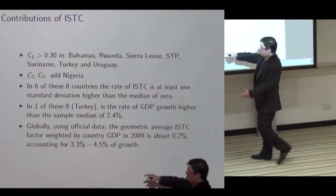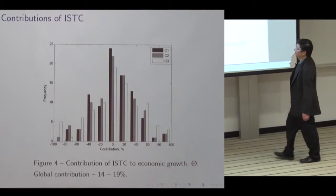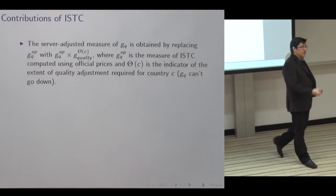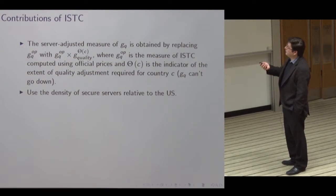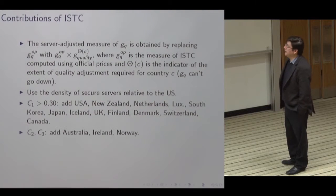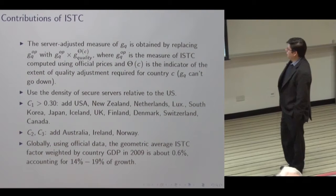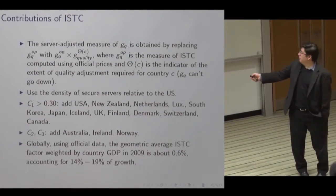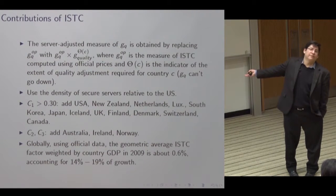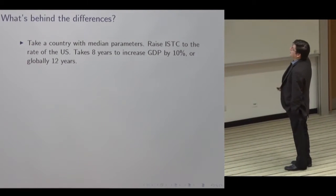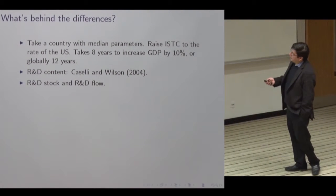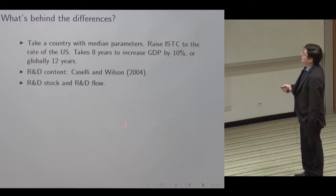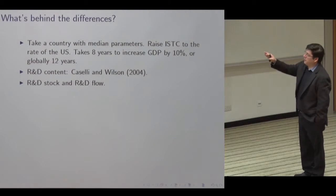When you average around the world across the set of countries we have, the contribution is very small. With the IT-based quality-adjusted measure, there are more places with higher contributions — this gives a boost to countries that use a lot of IT, which turns out to be the wealthy ones. The global contribution of ISTC to growth is quite a bit larger with this measure, though still not very big, basically because now on this list we have the United States, which is around 40% of world GDP.